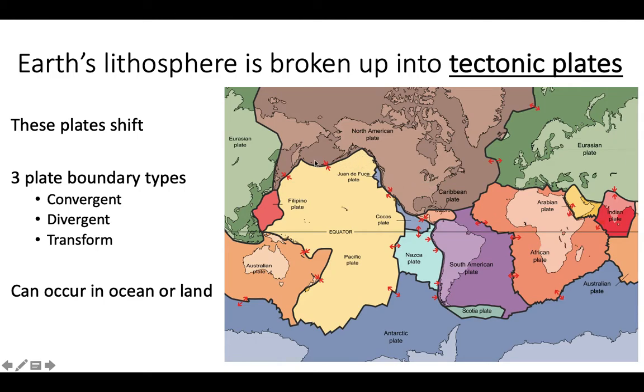And where two plates meet, that line there is what we call a plate boundary. And there are three types of plate boundaries. There are convergent boundaries, where the two plates are coming together, like you can see here.